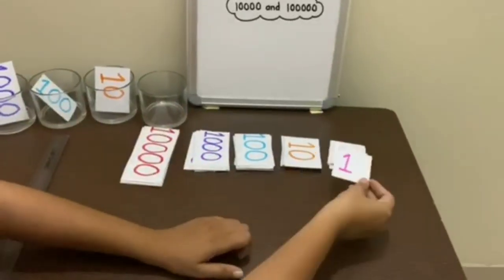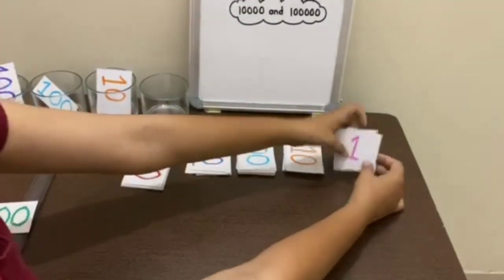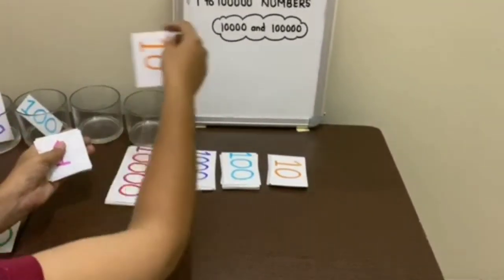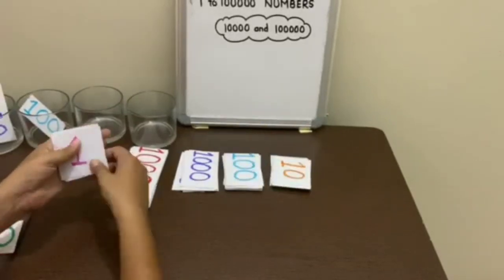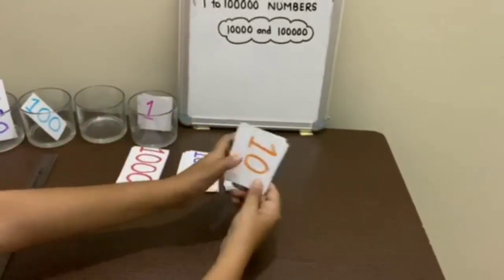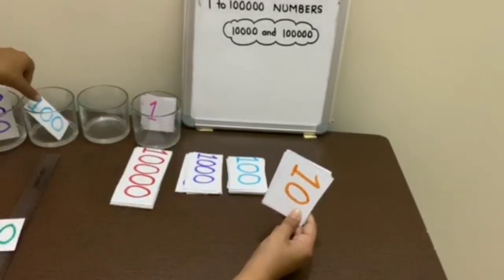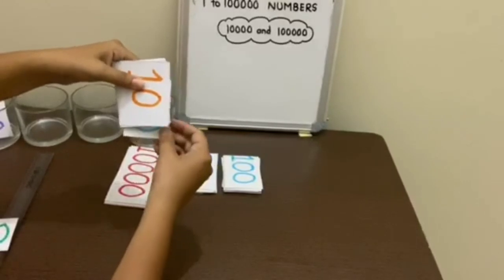Now if we add 1 to this, it becomes 10, so instead we will take a flashcard of 10. These are now 10 tens, which equals 100, so we will take a 100 flashcard instead.